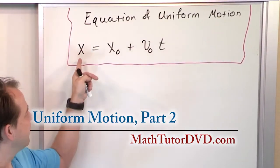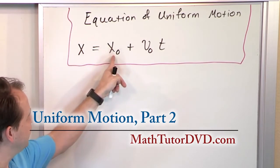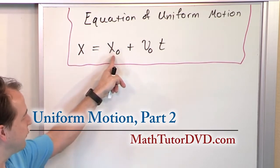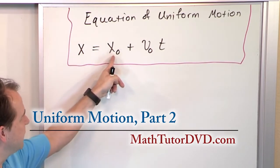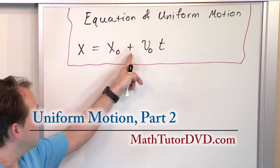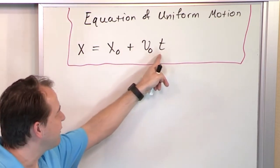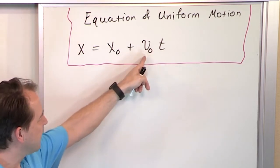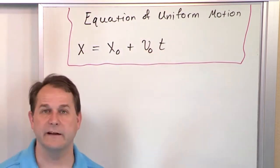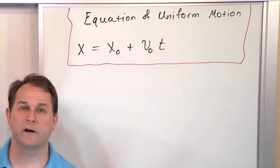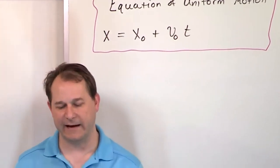The final position is equal to the initial position of whatever has moved, plus the distance traveled. Distance traveled is velocity times time. We talked about that in the last lesson.